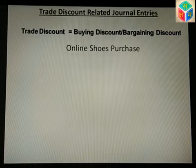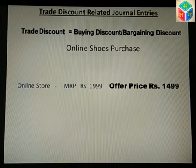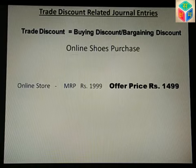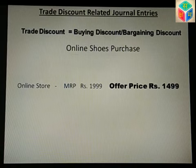For example, suppose you want to purchase shoes online. You go to Amazon or Flipkart and find a shoe brand you like. Its MRP is listed as Rs 1,999. But alongside that, the offer price is also shown — and right now the offer price is Rs 1,499. That means, though it is Rs 1,999, in the offer you pay only Rs 1,499.